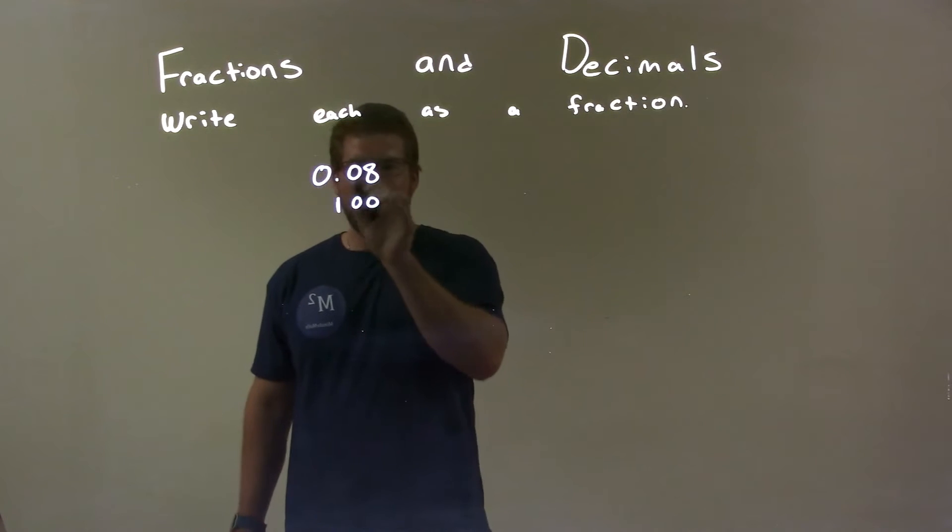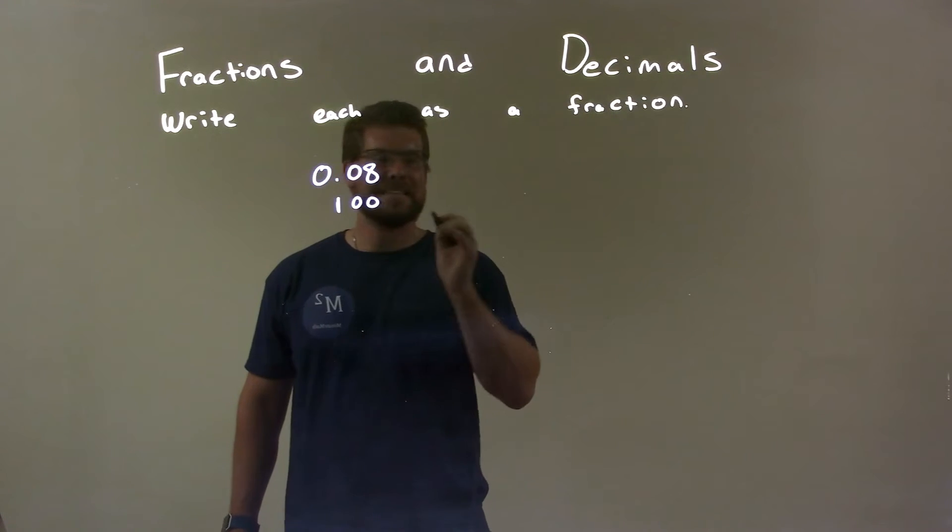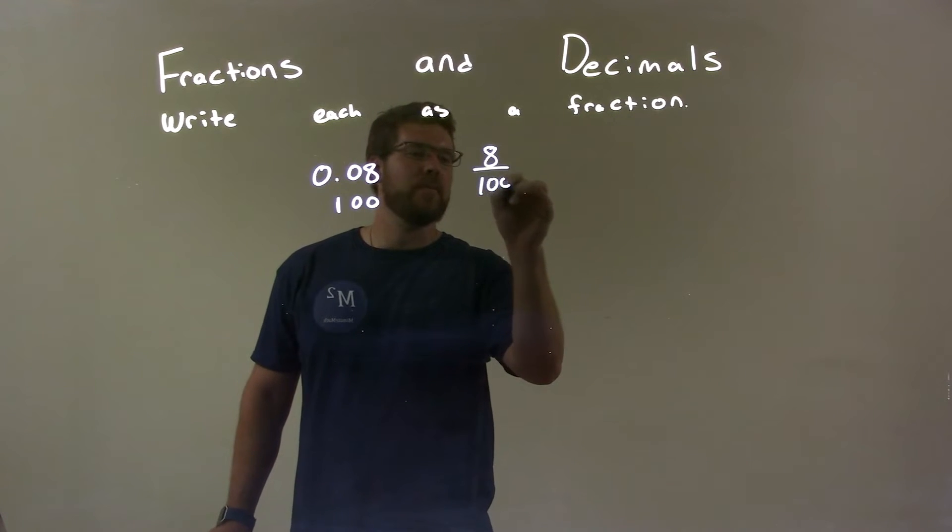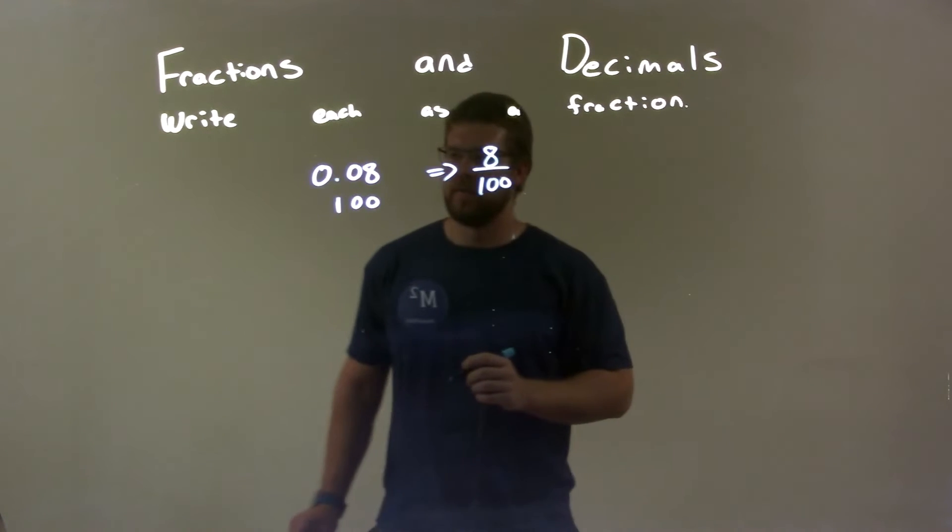So now what that shows us is that 0.08 is the same thing as 8 over 100. So those are the same things.